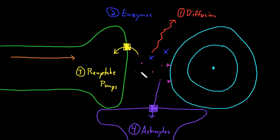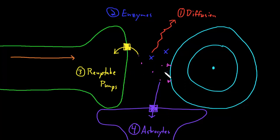So all of these different methods allow the synapse to be rapidly turned on and off, because neurotransmitter can be rapidly released into the synaptic cleft and then rapidly cleared out, so that the synapse is capable of conveying more information from the neuron to the target cell.